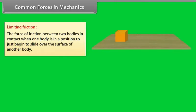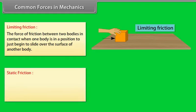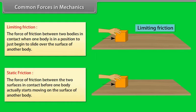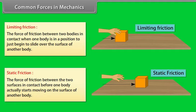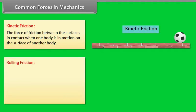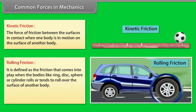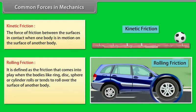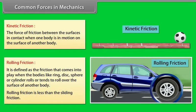Limiting Friction is the force of friction between two bodies in contact when one body is about to just begin to slide over the surface of another. Static Friction is the force of friction between two surfaces before one body actually starts moving. Kinetic Friction is the force of friction when one body is in motion on the surface of another. Rolling Friction occurs when a ring, disc, sphere, or cylinder rolls over another surface; rolling friction is less than sliding friction.